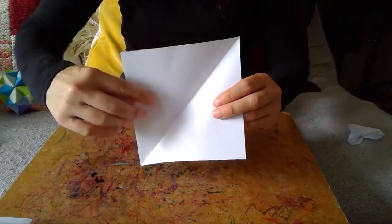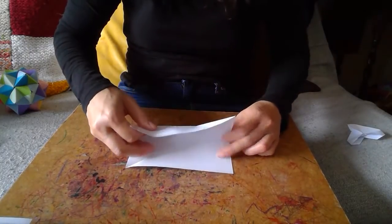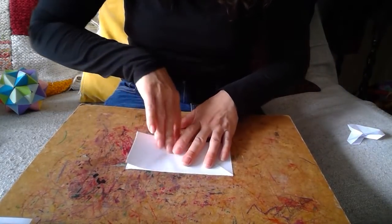So our first step is to do a horizontal line. So I'm going to fold in half to make a rectangle.